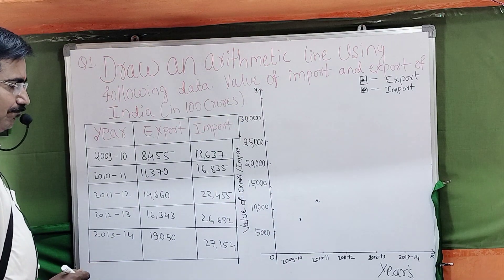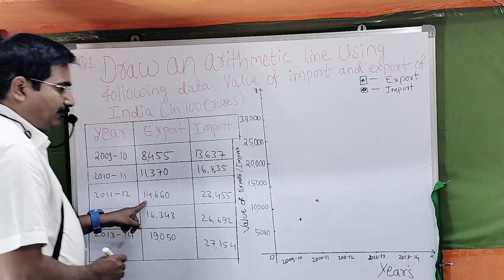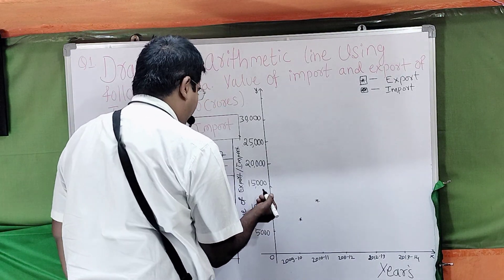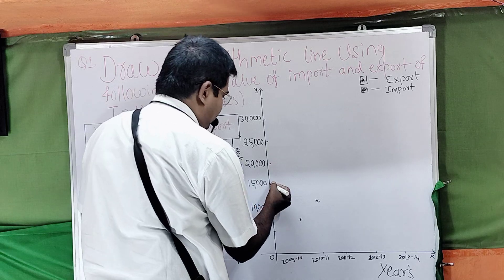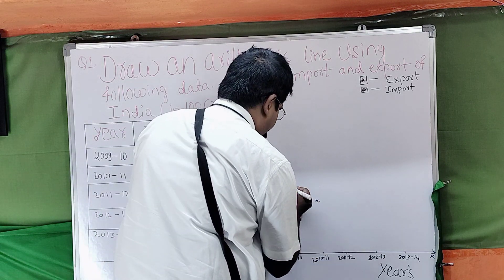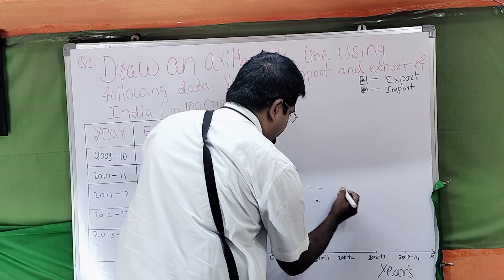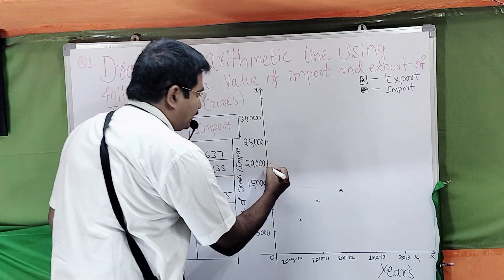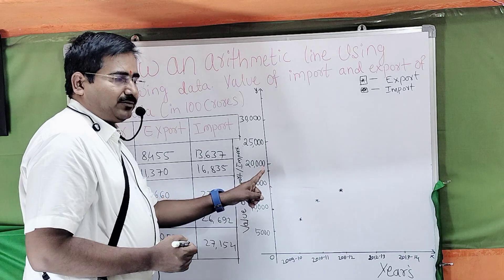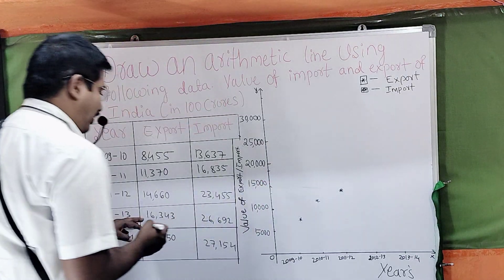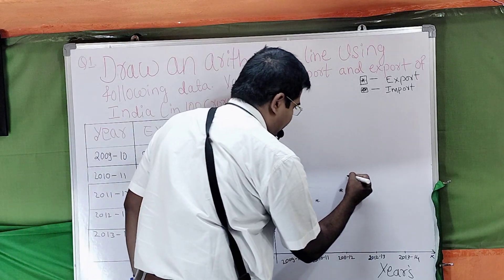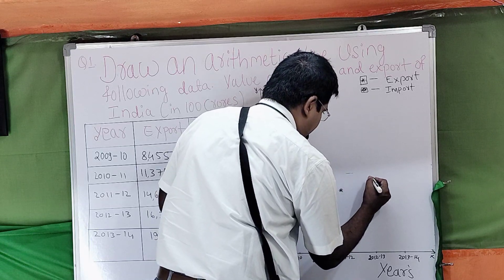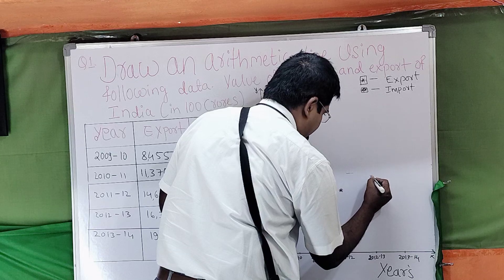Next dear student, 2011-12: how many export? 14,600 — that is 14.5, nearest to 15,000. Then 16 — in between 17.5 — so 16 is taken on the scale like this. Then 2012-13, dear students — this one star. Next, last one, 2013-14: 19,050 — nearest to 20 — so that is taken at 19 on the scale.